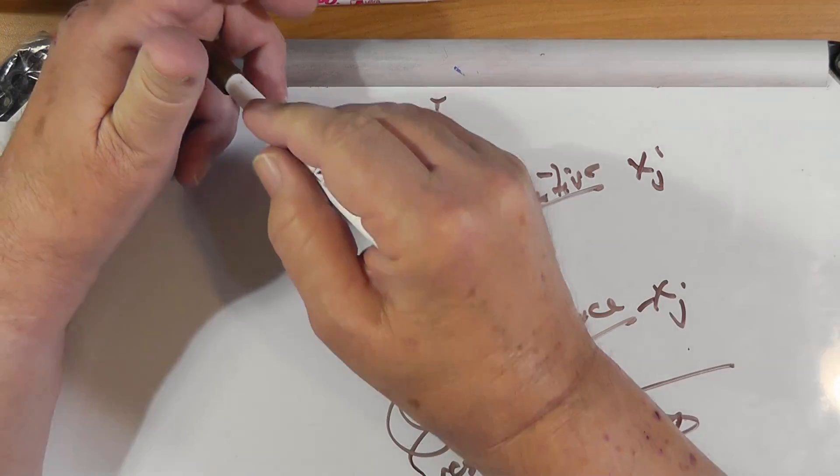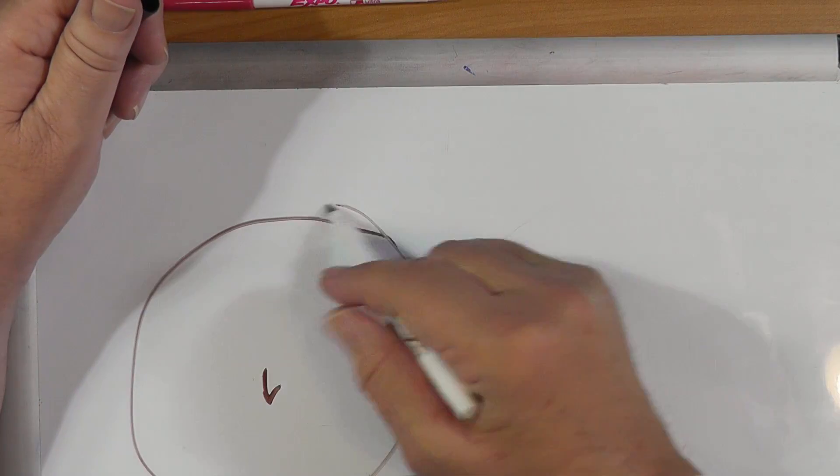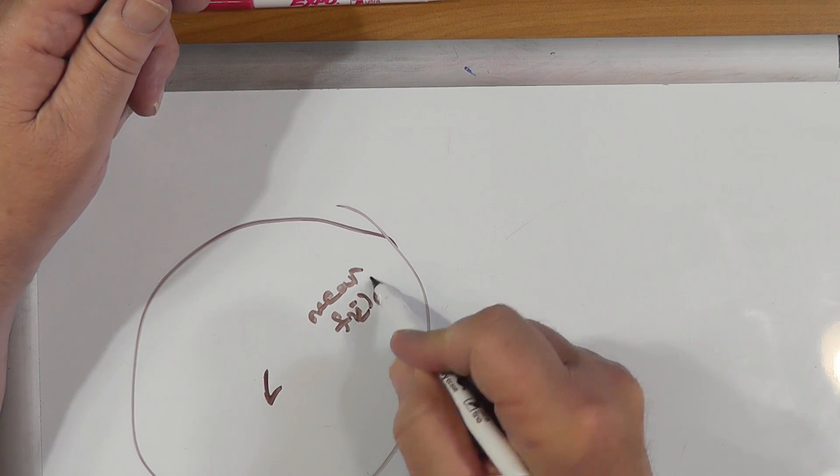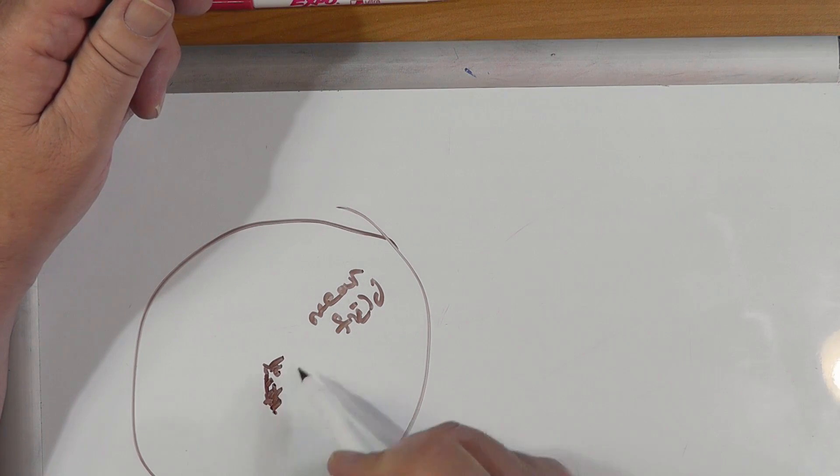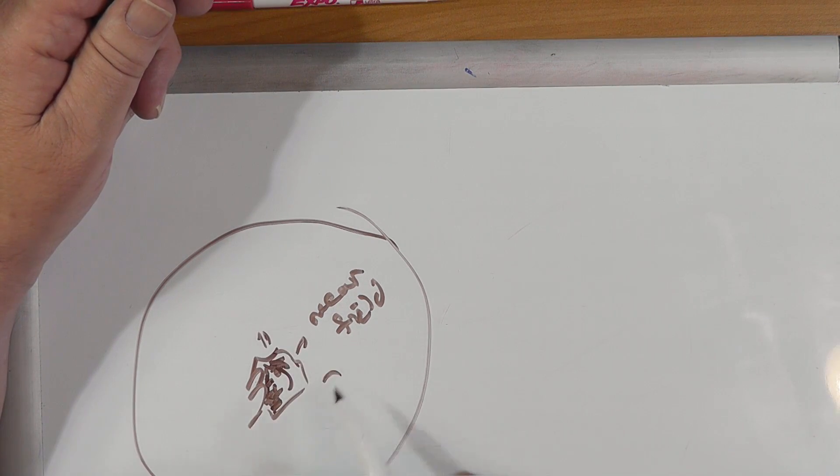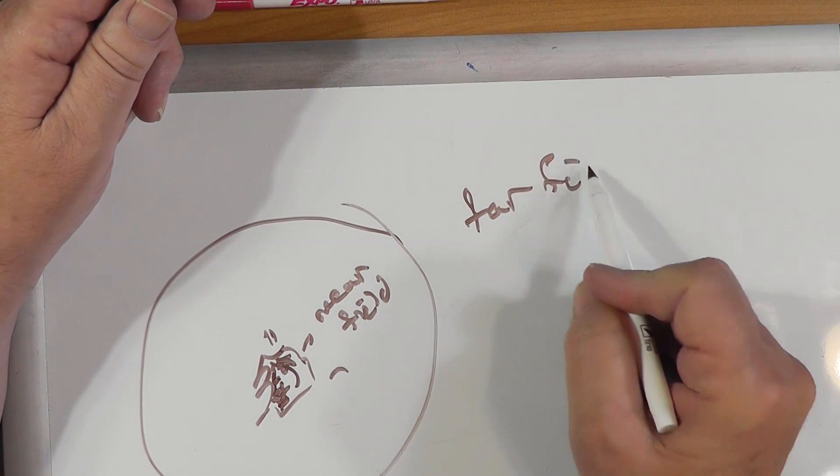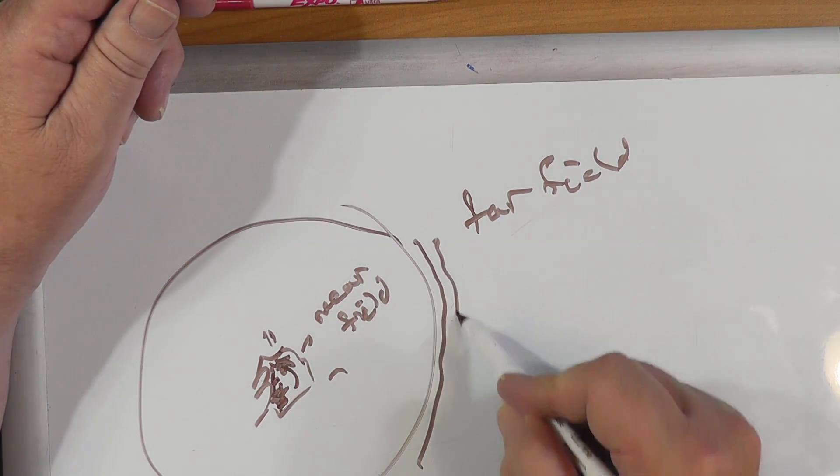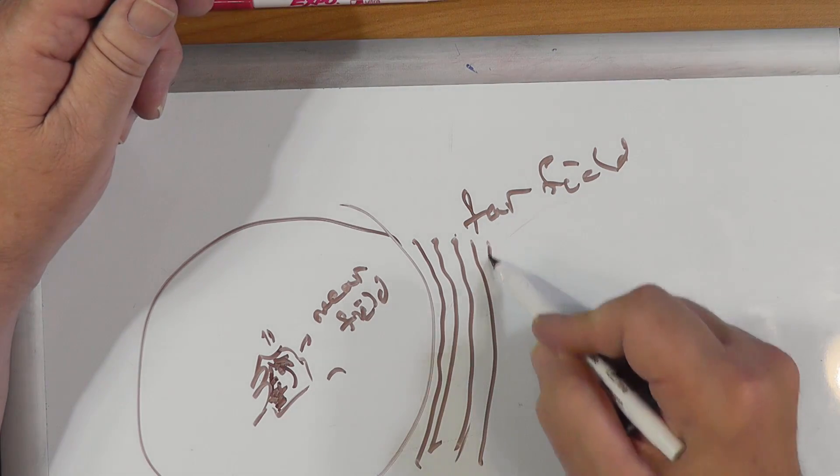Now, the near field is, you've got an antenna over here, surrounded by something called the near field, and this is where the parts and pieces of the radio wave that come out of here are all jumbled in here. And the far field, which is the one we're most used to dealing with, they have sorted themselves out.